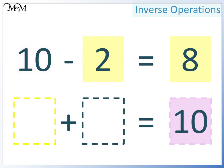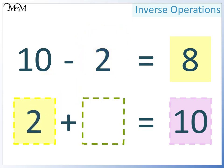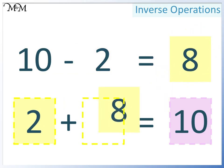In this first space we can have either 2 or 8 — it doesn't matter which one goes first. This time we will move 2 here, so in this space we must have 8. 2 plus 8 equals 10.